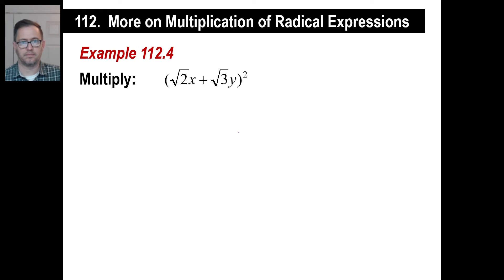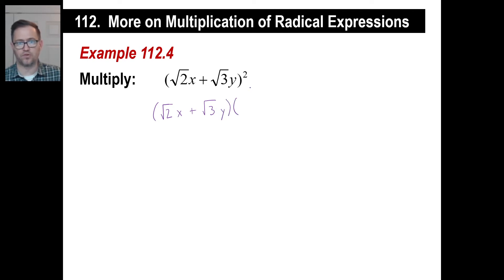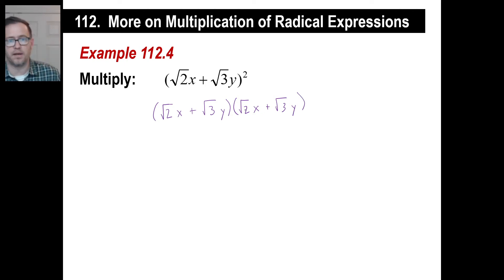Now this one looks complicated — there are variables, exponents, and square roots, but it's not impossible. The way we do it is write it out twice when it's squared. So: the square root of 2 times x plus the square root of 3 times y, written out twice. We do this exactly the same way. We have the square root of 2 times the square root of 2, which is the square root of 4 — that's just 2. And x times x is x squared.